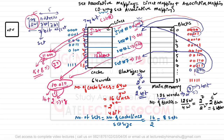Let us take a single example to differentiate between direct mapping, associative mapping, and set associative mapping. In the set associative case, we will look at two-way, three-way, and four-way set associative. To quickly understand: when we say two-way set associative, the set size is 2, meaning each set contains two cache lines.